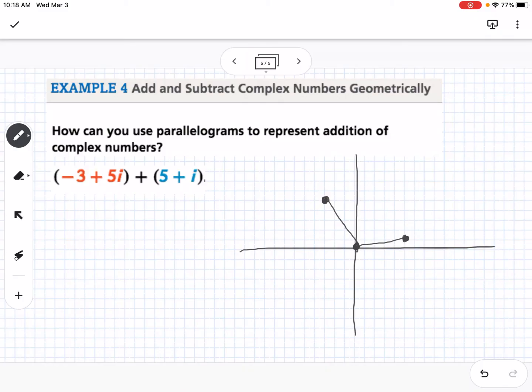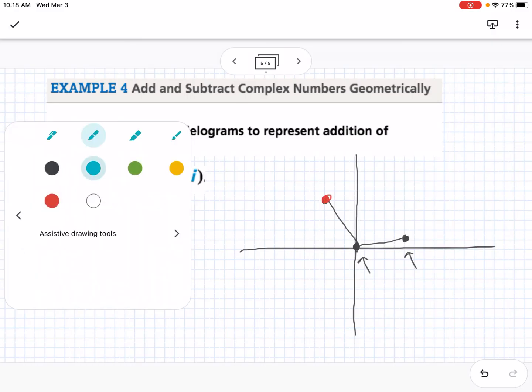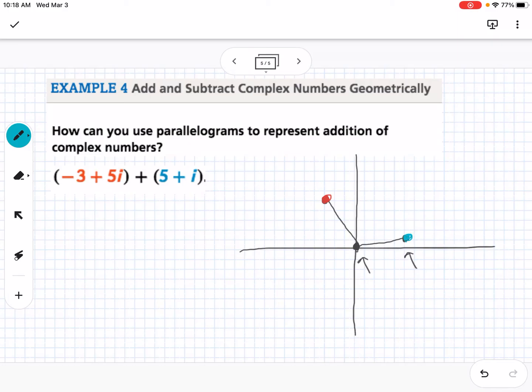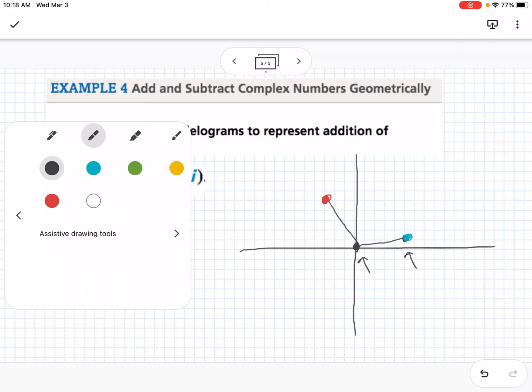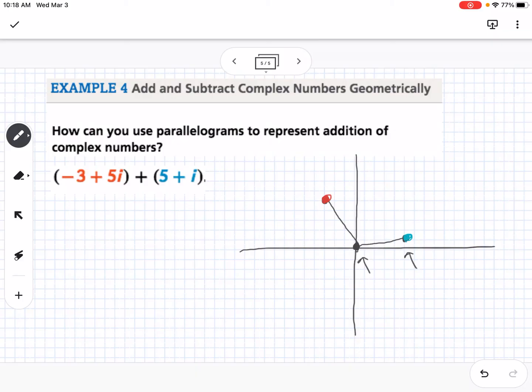And so we can use, we know a parallelogram is going to have parallel slopes. So if we think about these two points right here, we know that going from the point on the left to the point on the right, I went up 1 over 5. So I'm going to start at the red point, which is our negative 3, 5, and I'm going to go up 1 over 1, 2, 3, 4, 5.